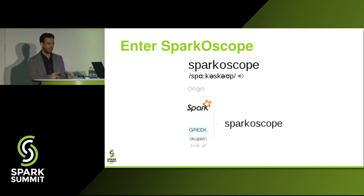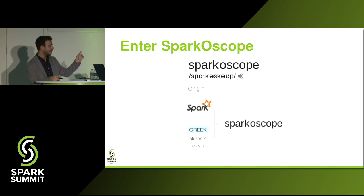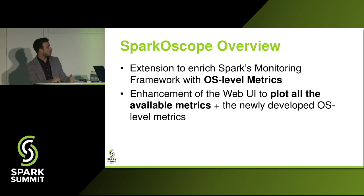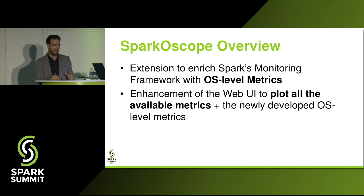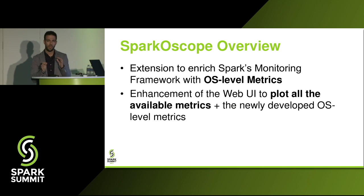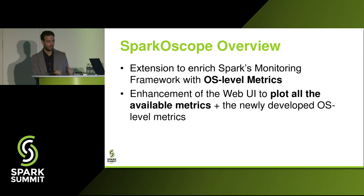That's when we started to develop Sparkoscope. As I often say, most words have Greek origins — this is the case with Sparkoscope as well; the second part comes from the Greek 'skopein,' which means to look at something. Sparkoscope is an extension to enrich Spark's monitoring framework with operating system level metrics. On the other side, we have enhanced the Web UI to plot all available metrics — both the built-in Spark monitoring framework metrics and the newly developed OS-level metrics.